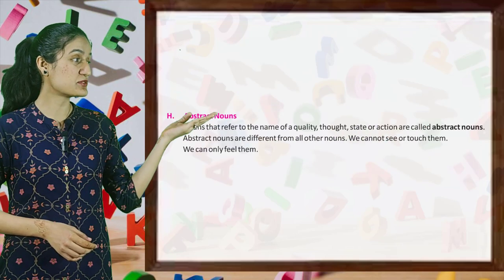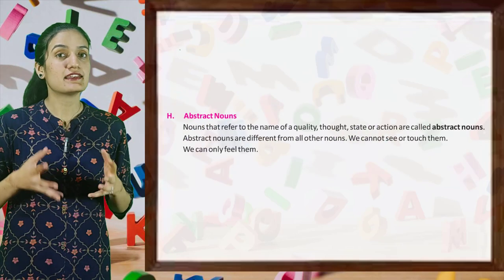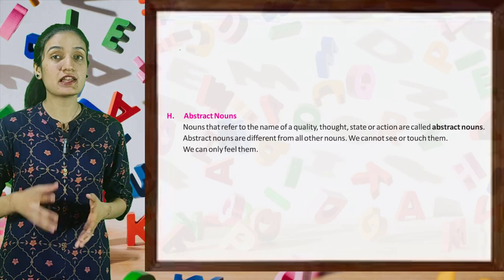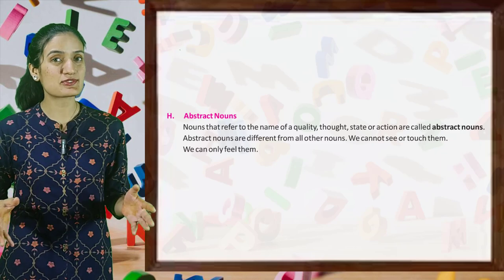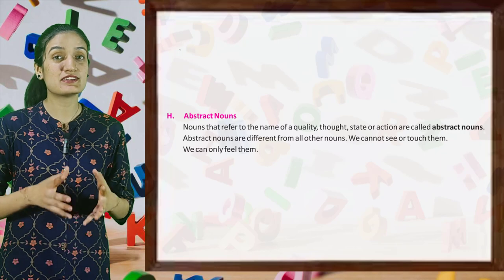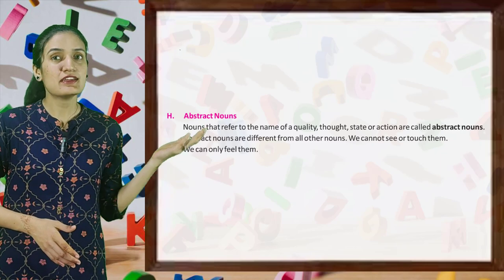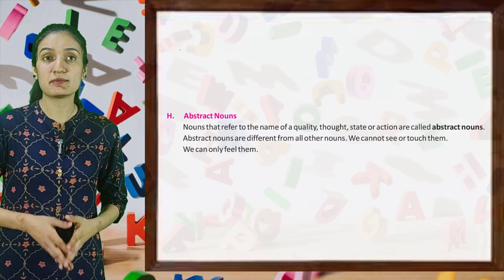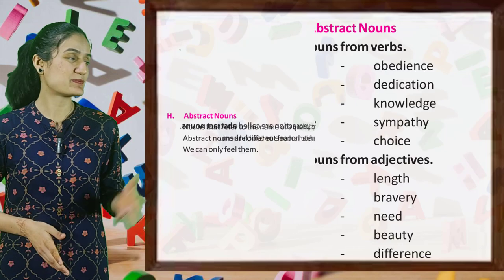Now let's move on to abstract nouns. Nouns that refer to the name of a quality, thought, state or action are called abstract nouns. Abstract nouns are different from all other nouns — we cannot see or touch them. We can only feel them.